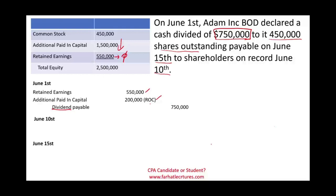We're going to assume they have enough cash — $750,000 in cash on the balance sheet. On June 10th, which is the record date, we have no entry. The record date means on that date we review our shareholder list — who owns the stock on June 10th — and gather their names, addresses, Social Security numbers, EIN, whatever we need to send them the money on June 15th. On June 15th, we cut the check or wire the money to the various shareholders by debiting the payable and crediting cash.